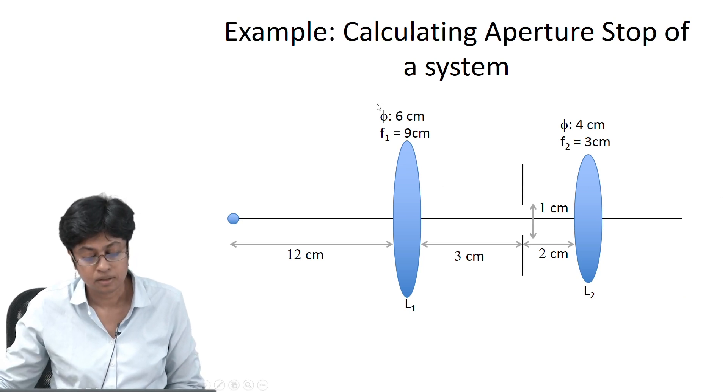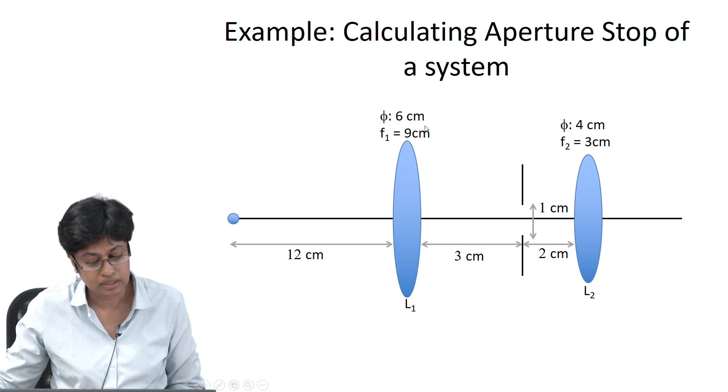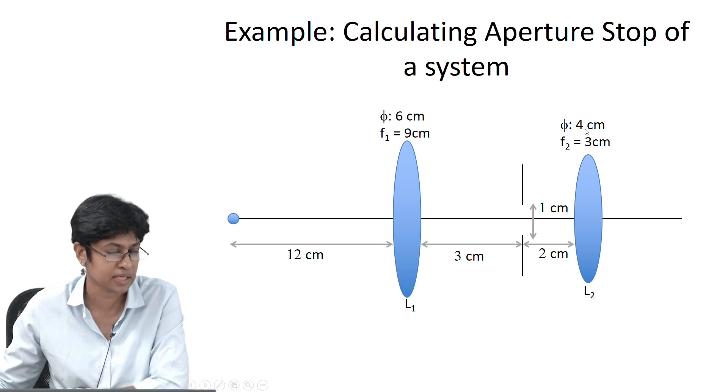The symbol phi denotes the diameter of the lens. The diameter is 6 centimeters for the first lens and 4 centimeters for the second lens — that is the physical size. The aperture stop is the element that limits the cone of light that reaches the image plane, so I am going to calculate the aperture stop by calculating angles. I will calculate the angle subtended by each of these elements and find out which one has the smallest cone — which one has the smallest angle. My method of calculating the aperture stop is calculating angles.